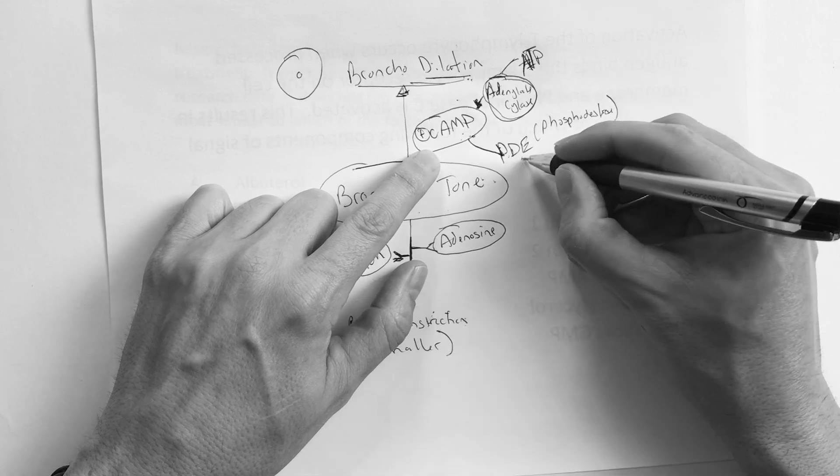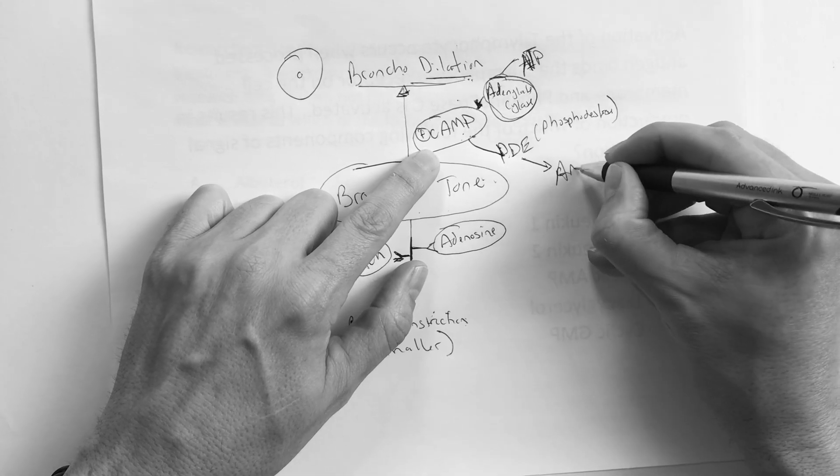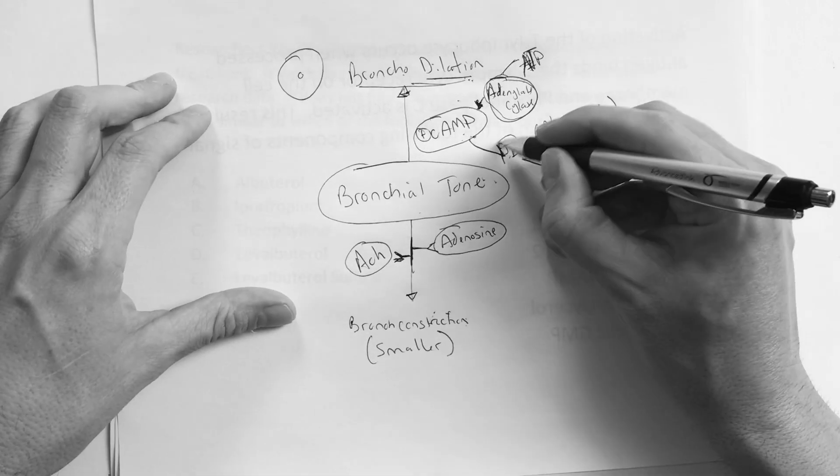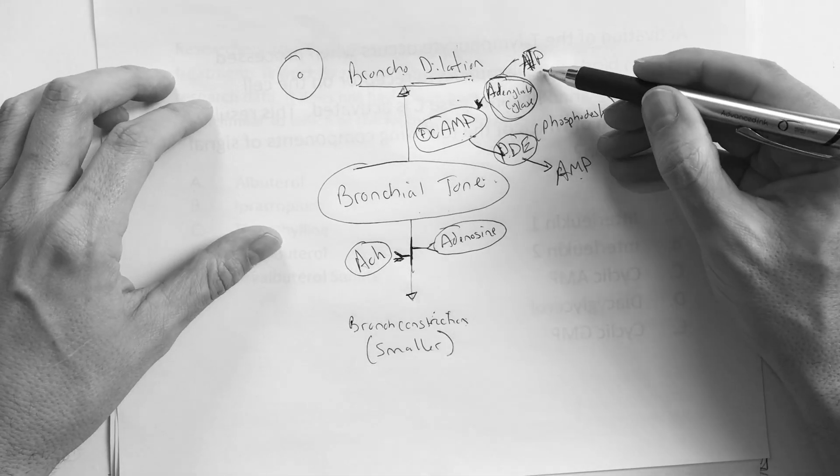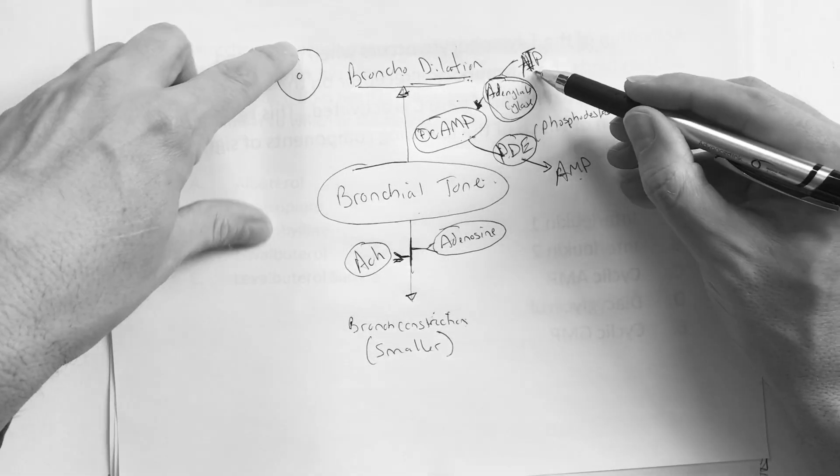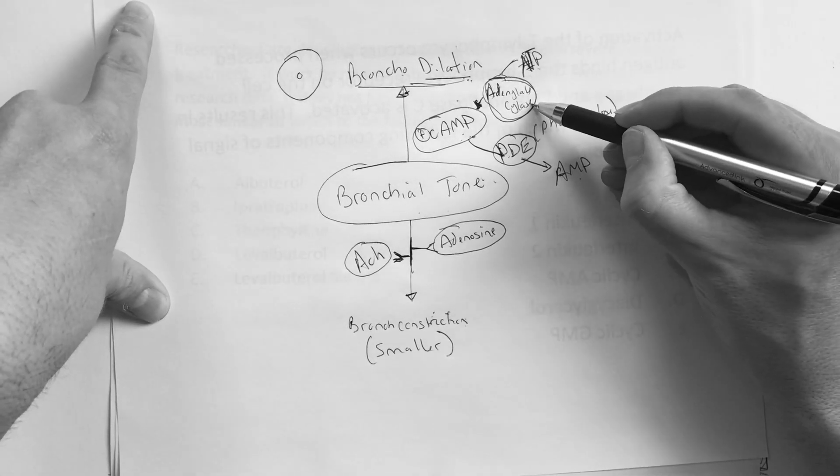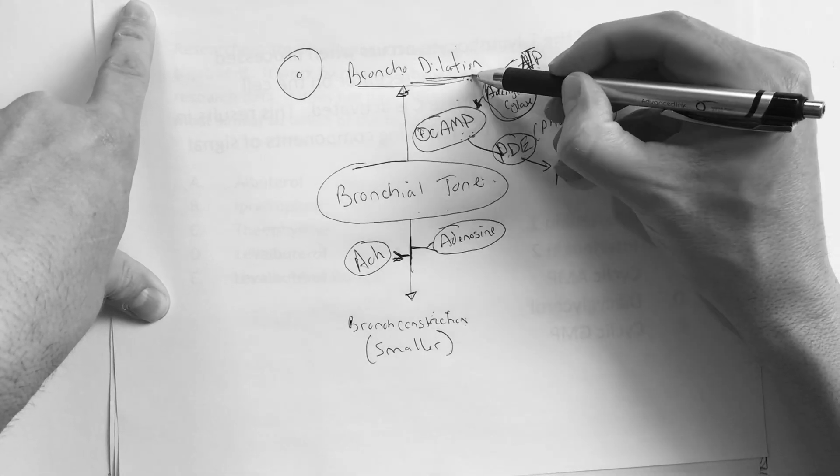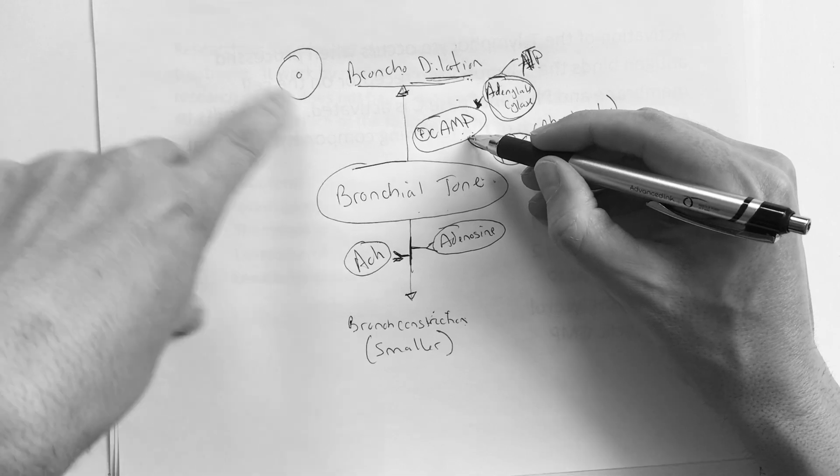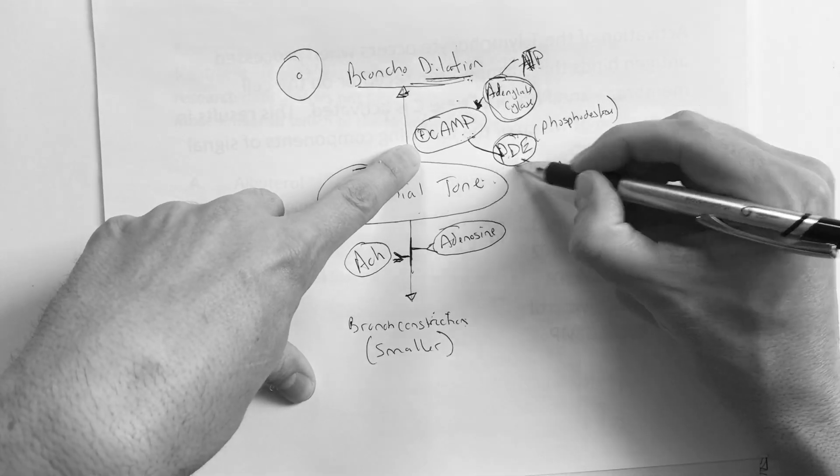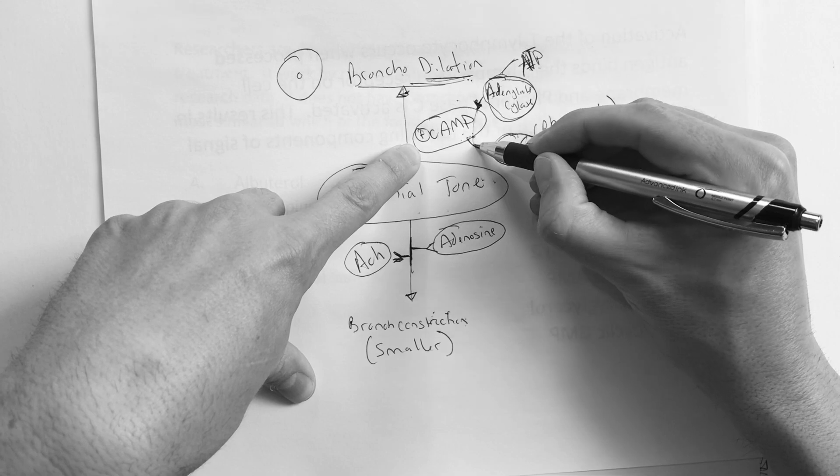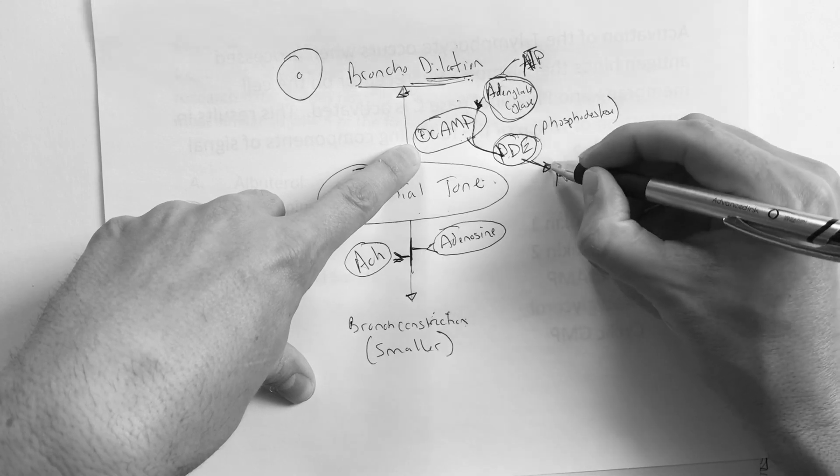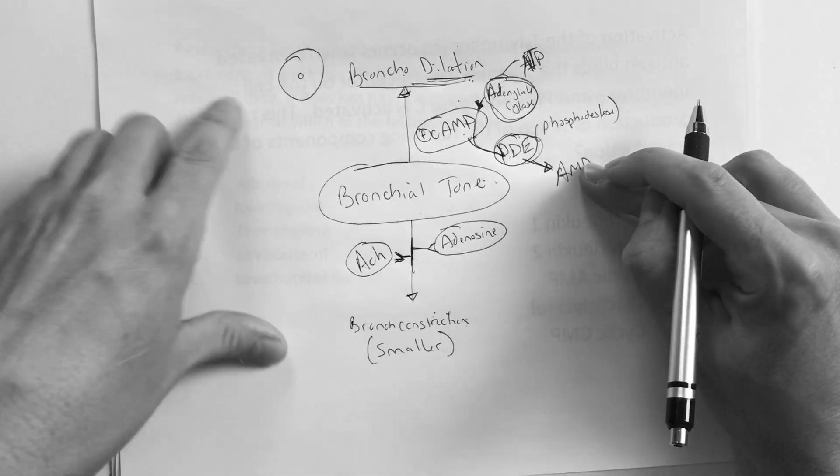That gives me cyclic AMP, which allows me to bronchodilate. To break this down and make this stop, you have PDE, known as phosphodiesterase. This breaks the cyclic AMP down into just AMP, and that happens naturally.